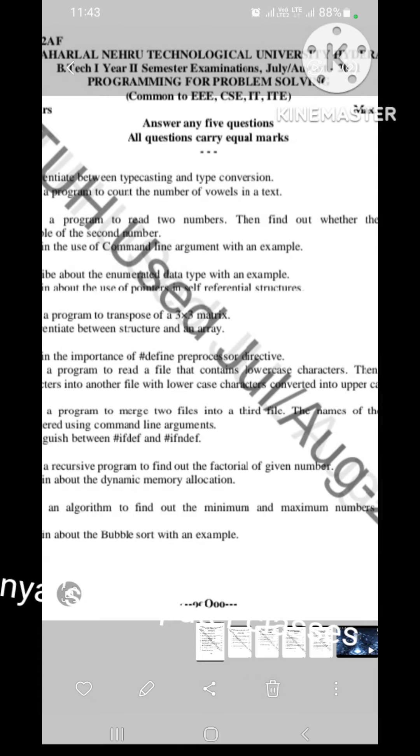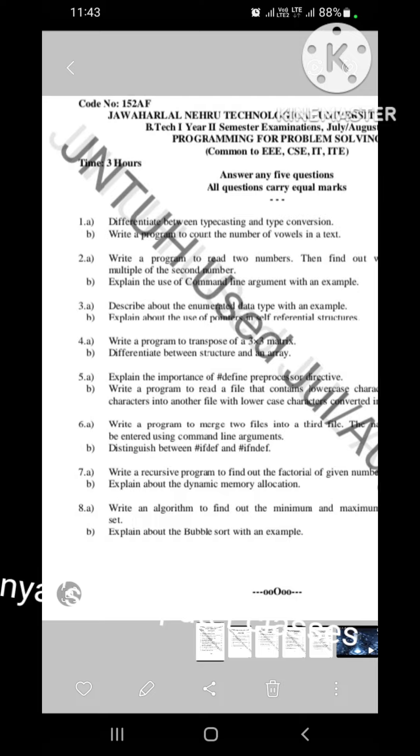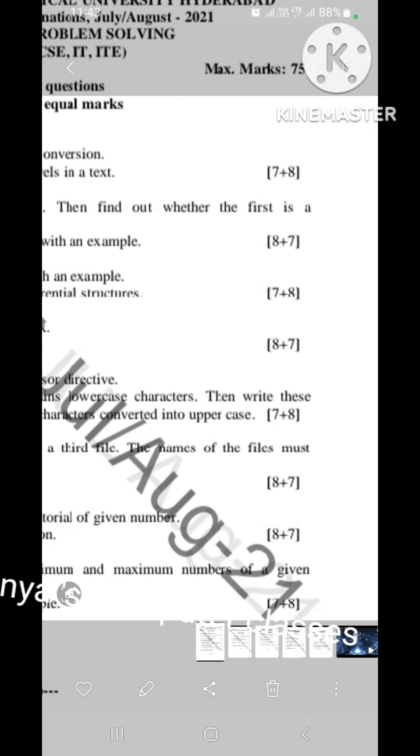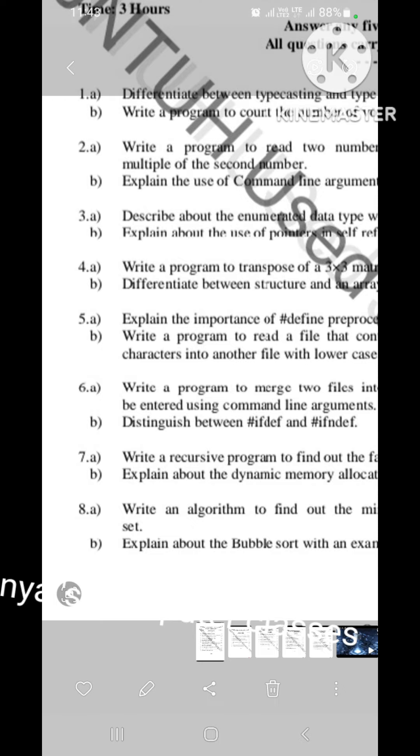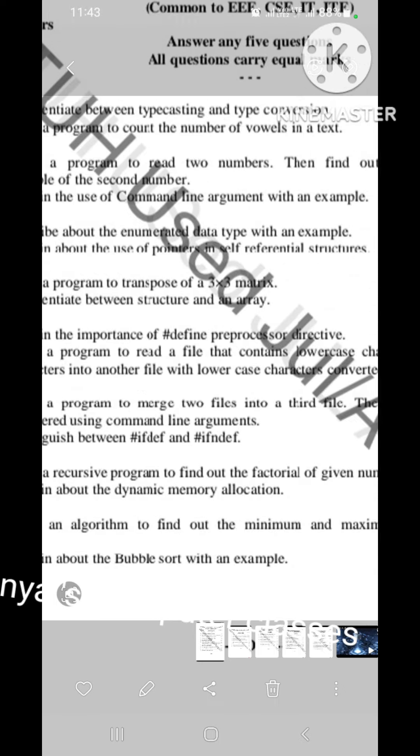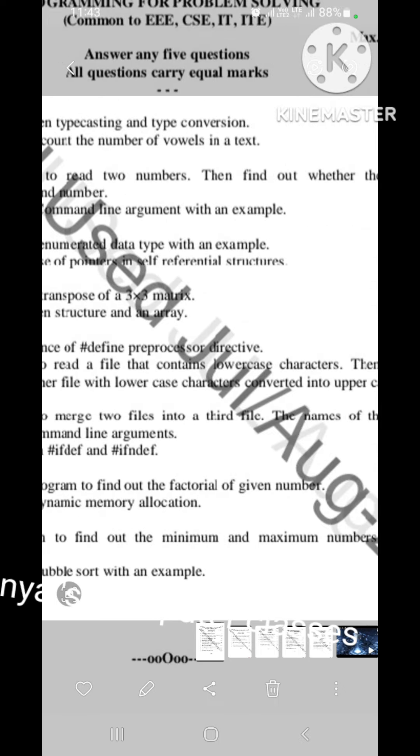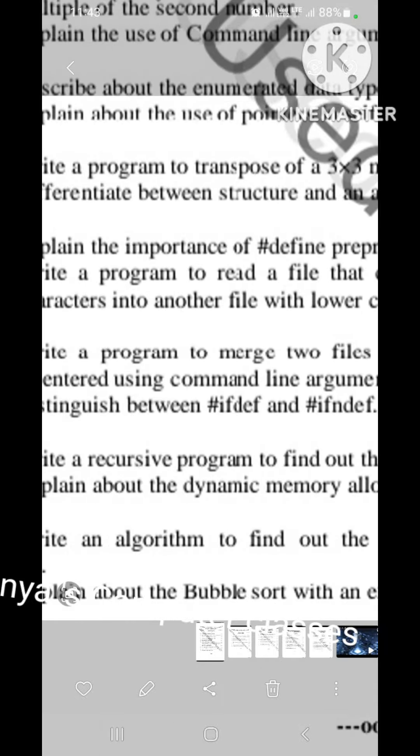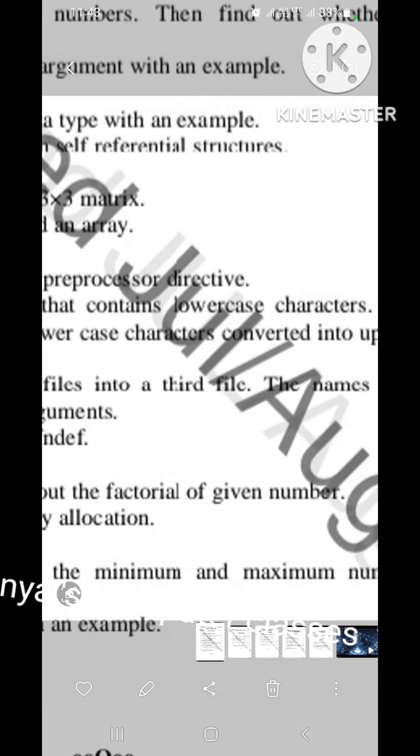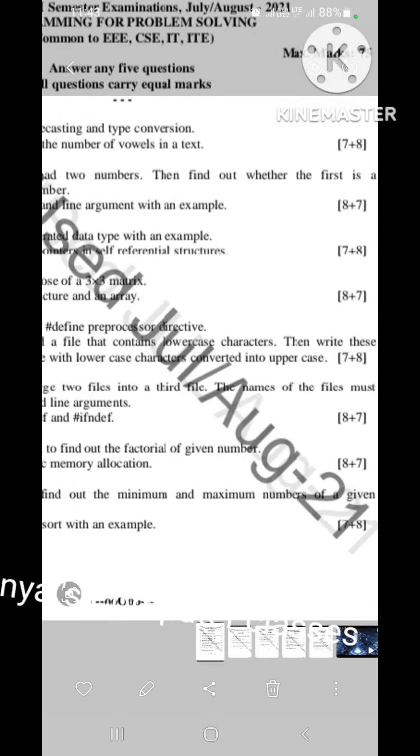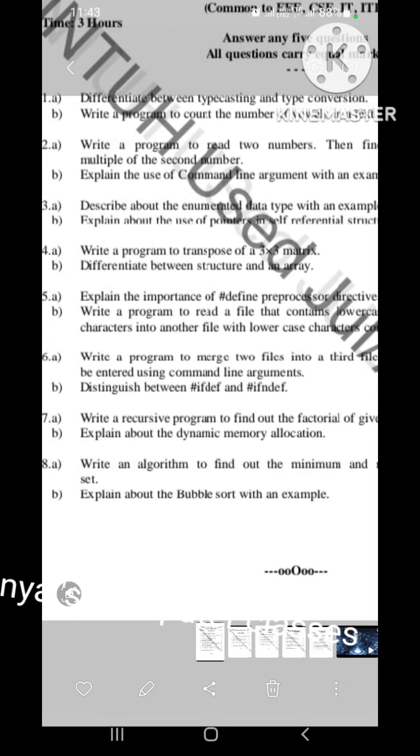Fifth question is, explain the importance of hash different preprocessed directives. This is again from preprocessed directives. 5A, that is for 7 marks question, and then B bit is, program. Write a program to read a file that contains lowercase characters, then write these characters into another file with lowercase characters converted into uppercase letters. It is a 8 marks question.